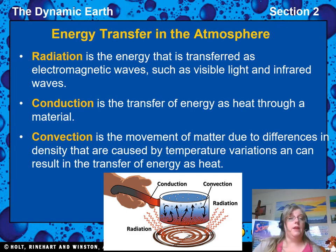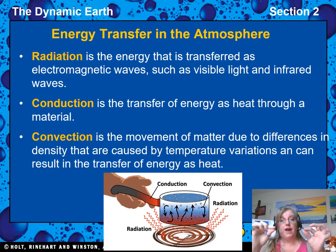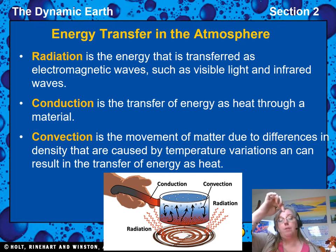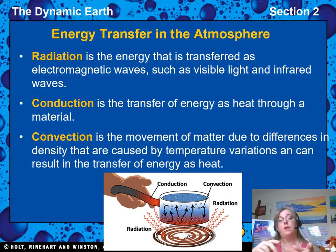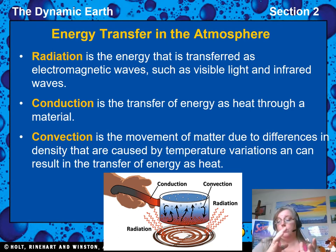The next part of the lesson is about how heat is transferred through the atmosphere. The atmosphere circulates temperature so that you don't get too hot at the equator and too cold at the poles. It balances the temperature of the air, showing us how heat moves across the whole Earth.